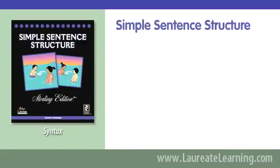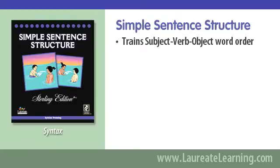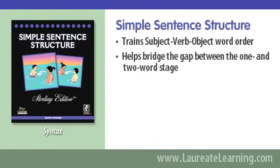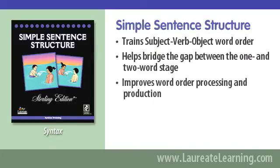Simple Sentence Structure is designed for children who have a core vocabulary of nouns and verbs but are having difficulty conveying meaning. This program trains the importance of subject-verb-object word order and helps children bridge the gap between the one and two-word stage. By highlighting the roles that subjects, verbs, and objects play in sentences, this program improves word order processing and production.